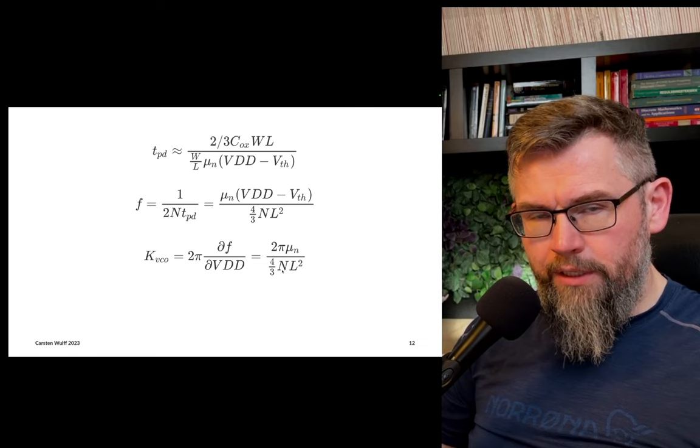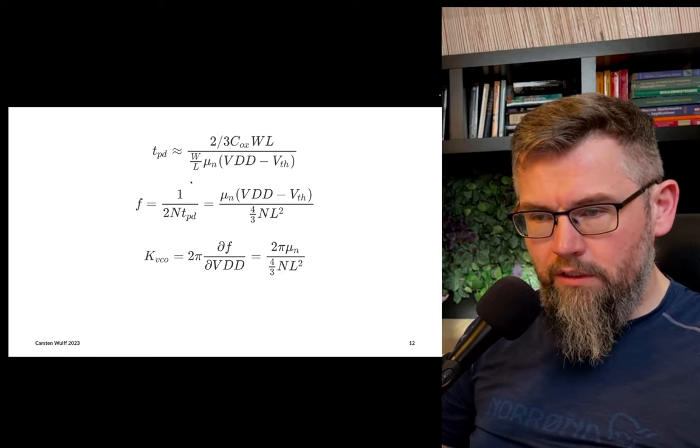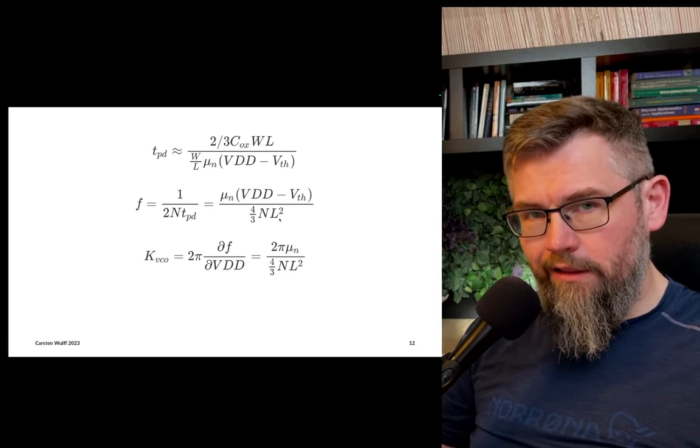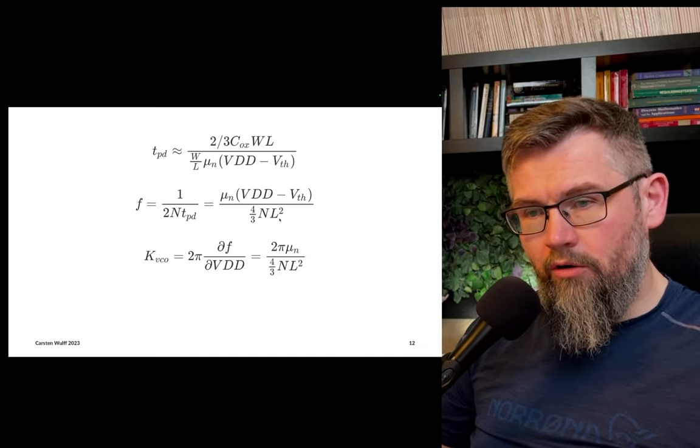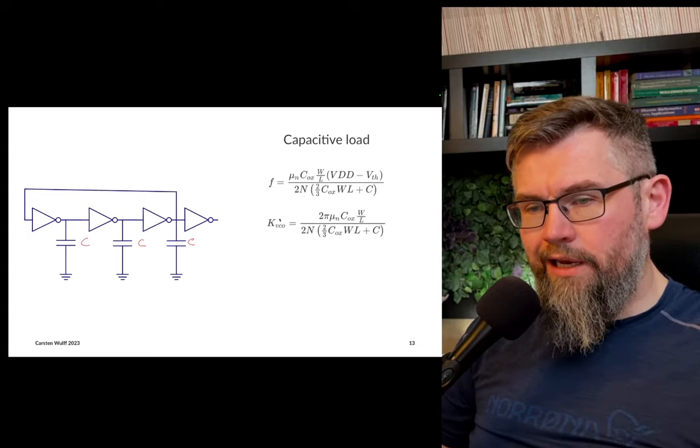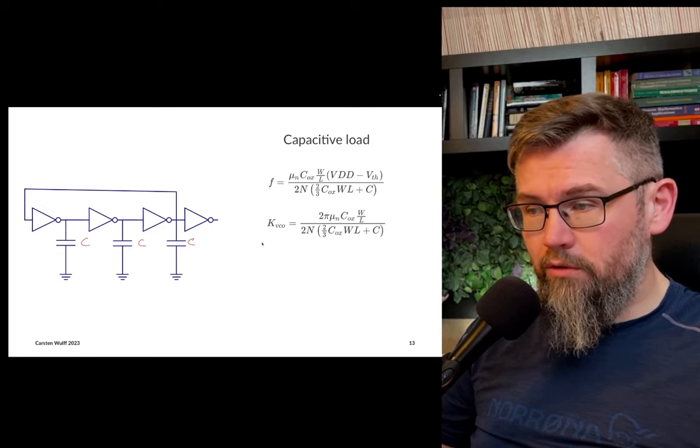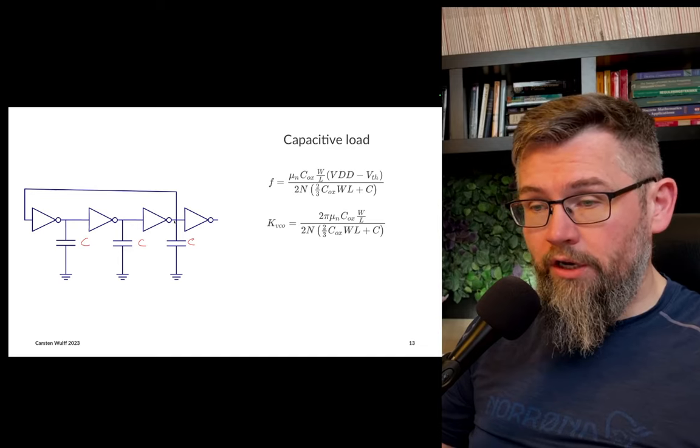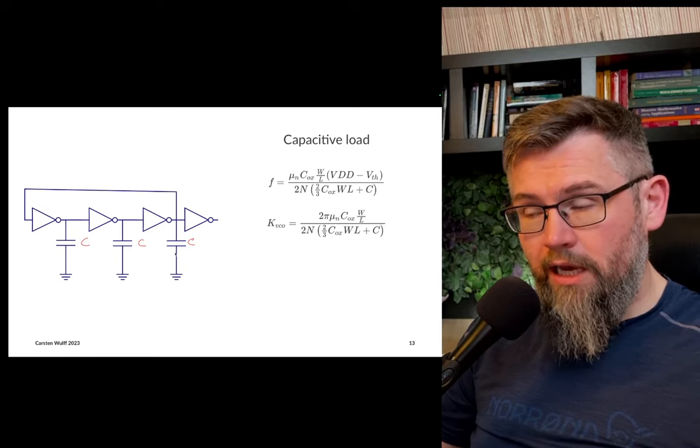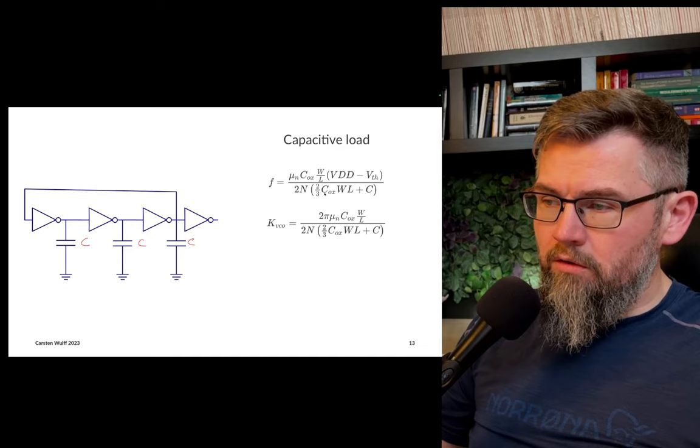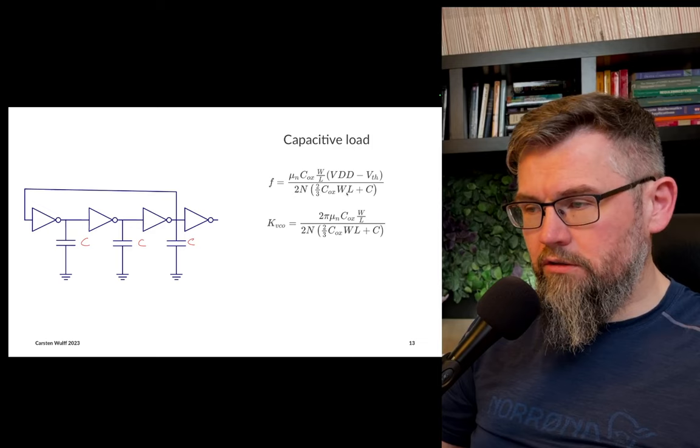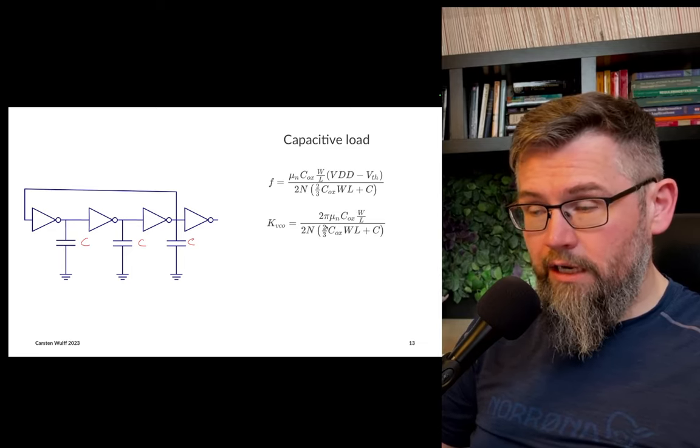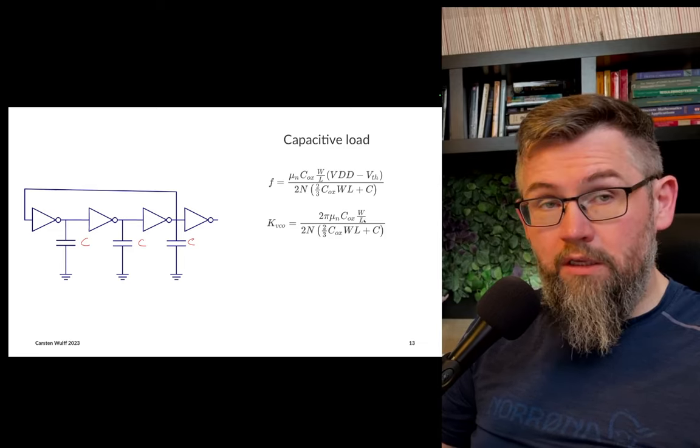But of course, maybe we can't get the kVCO low enough, or we can't get the frequency low enough for three inverters. Then we can change the frequency by increasing the number of inverters, or we can change the length of the devices. That will also decrease our oscillation frequency. It's also possible to add capacitance to every node, and that changes our equations a bit. No longer is the capacitance seen at the output of an inverter dominated by the CGS of the next stage. It might actually be the capacitors that we add. If it's the capacitors that we add, then assuming C is much larger than two-thirds C-oxide WL, then the whole equation simplifies, and we no longer have an L-squared relationship. We have an L-relationship, so one over L for the kVCO and for the frequency.